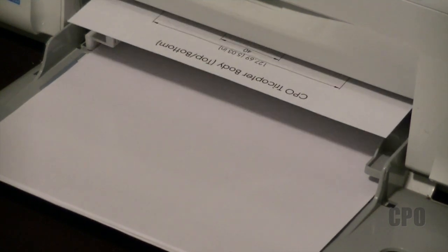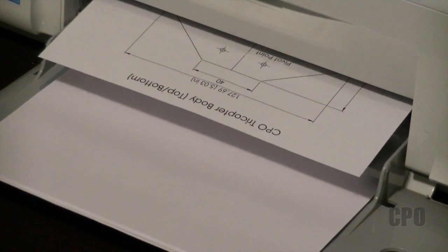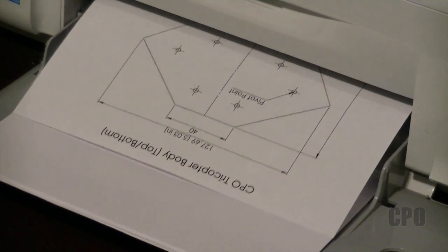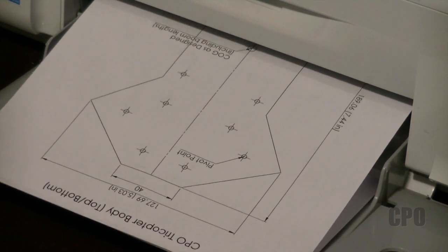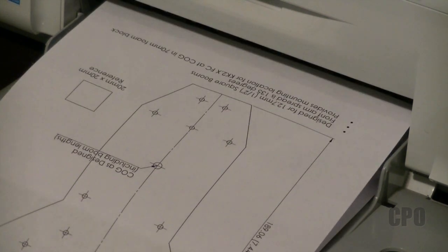Hey there, CPO here and I'm ready to start cutting out the body for my tricopter based off of the design plans that I developed previously. So if you're following along with a different set of plans, go ahead and print those out now. Hopefully they're like mine and fit on a single sheet of paper which will make it convenient for building. So grab your plans, let's get started.